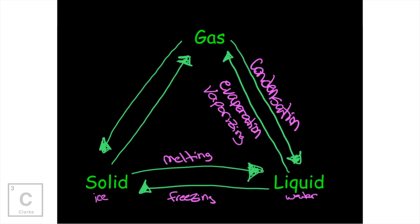But what if we go from a solid directly to a gas? We can do that! If we bring the temperature up very quickly, we can skip the liquid form. A good example of this is dry ice to make smoke. At Halloween, you put a little water on dry ice and it goes directly from a solid to a gas. That is called sublimation. And the very opposite — going from a gas to a solid — this is called deposition.